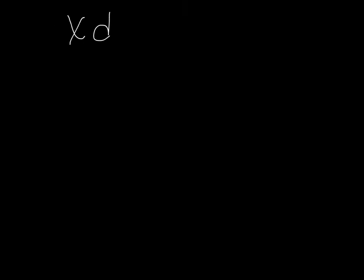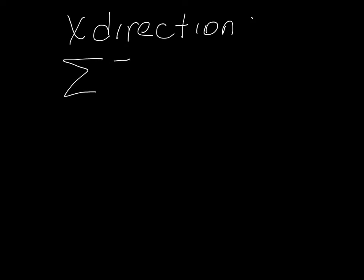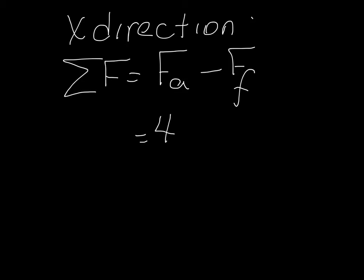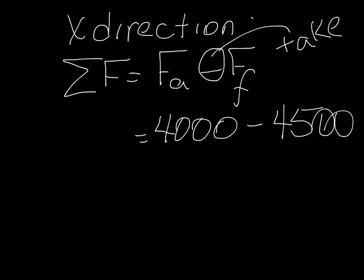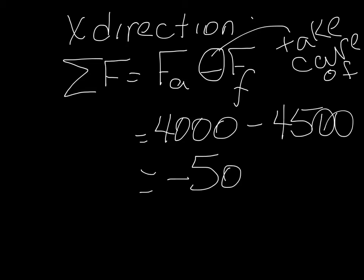Now let's look at the x direction. In the x direction we have two forces: the sum of the forces equals the applied force minus the force due to friction. That's 4,000 minus 4,500 — putting that negative sign in takes care of the direction. So the sum of the forces is negative 500 newtons, which means the car is moving.